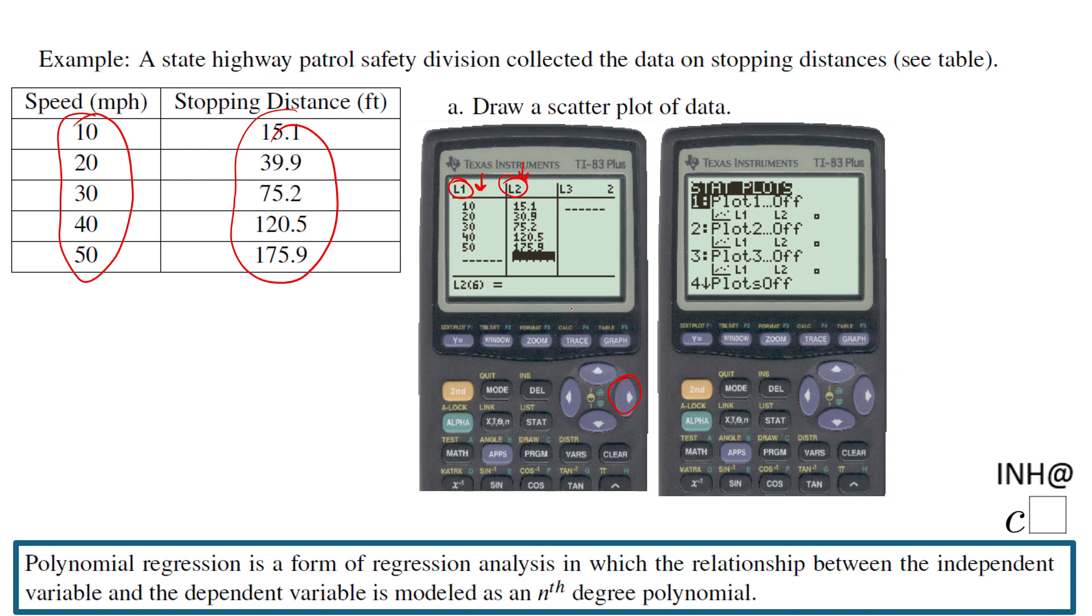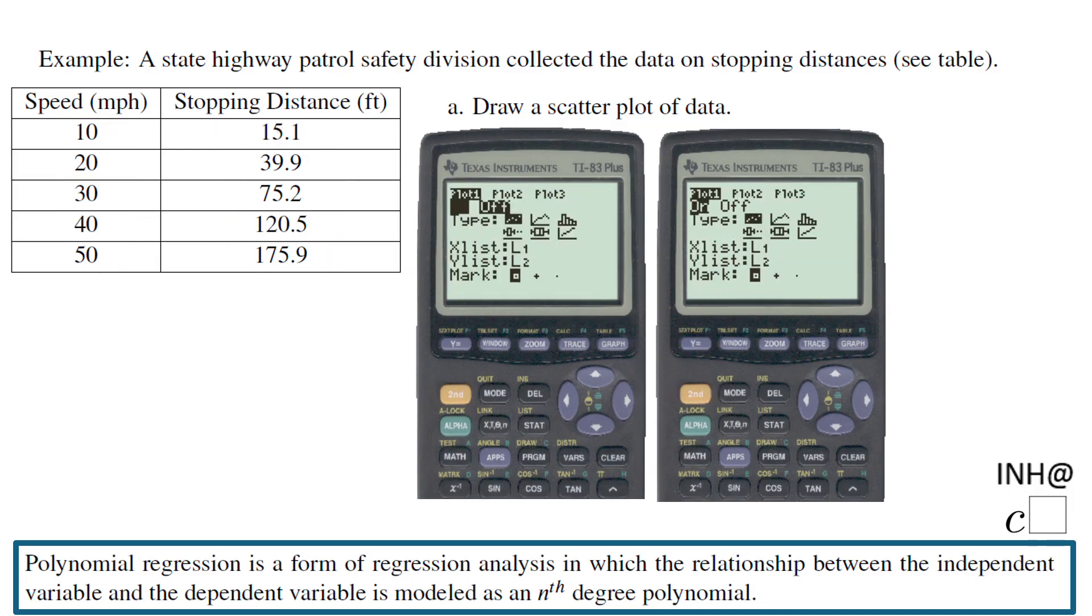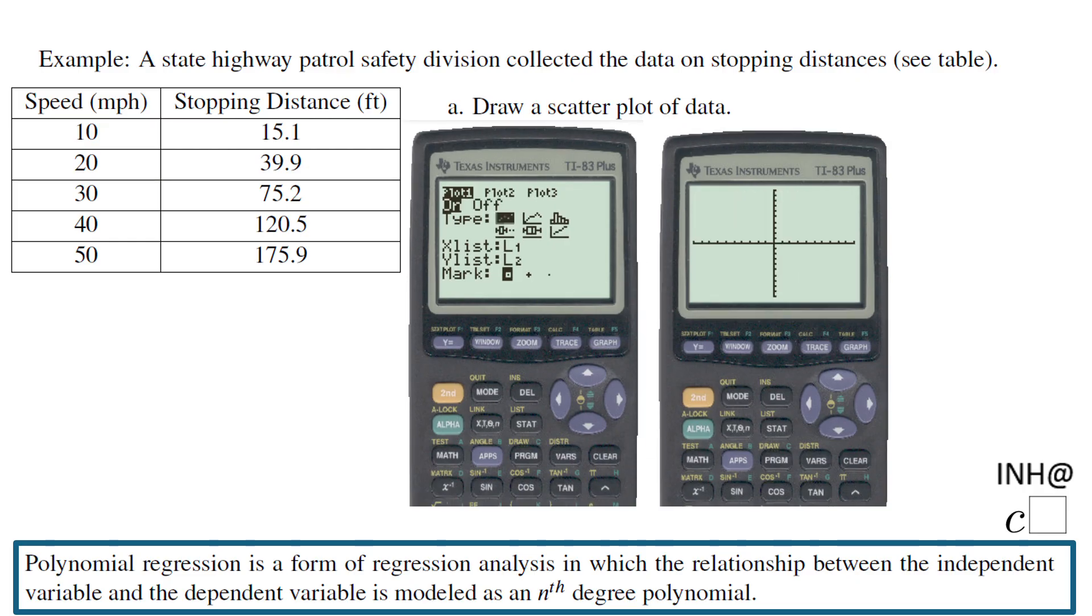The next thing will be to see that data in your calculator. For that reason, you're gonna click on this button, Second and then Y=. Now you're gonna get something called the statistical plots. You have these four plots, you can use any of those. I'm gonna go with number one. It's already highlighted by the TI calculator and you want to activate it, so you're gonna click Enter. If it's off, you want to be on, and now it's on.